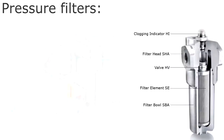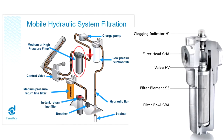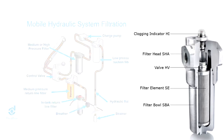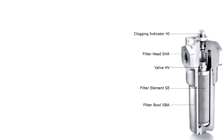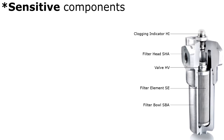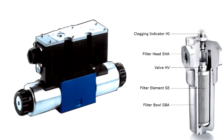Pressure filters are located downstream from the system pump. They are designed to handle the system pressure and are sized for the specific flow rate in the pressure line where they are located. Pressure filters are especially suited for protecting sensitive components such as servo valves.